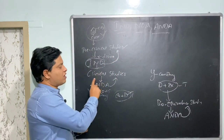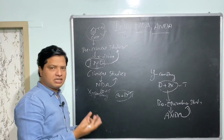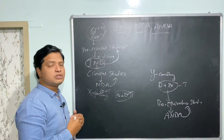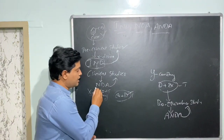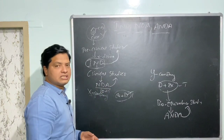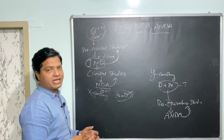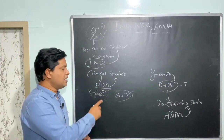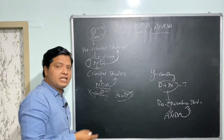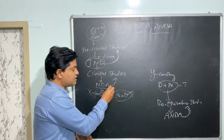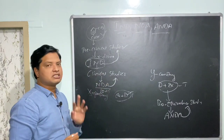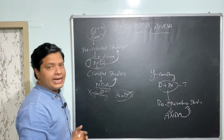Next, once we have conducted clinical studies and they are successful, I want to sell the drug in a particular market. For that, I need to fill another application called the New Drug Application. Because the drug is new and I want to sell it into the market, I need to fill an NDA through the regulator — it may be FDA or anybody. The information to be given in the NDA pertains to the clinical studies.